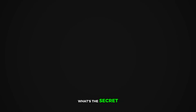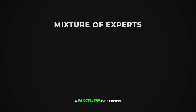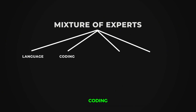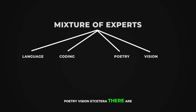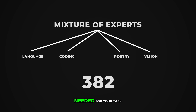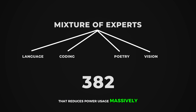What's the secret? The model is built as a mixture of experts — specialists in different areas: language, coding, poetry, vision, etc. There are 382 experts. When you use it, it only activates the experts needed for your task. That reduces power usage massively, because it doesn't run the full model every time.